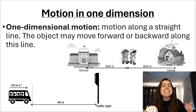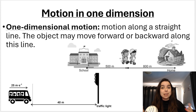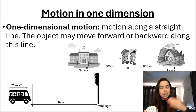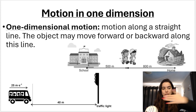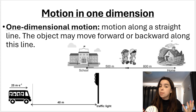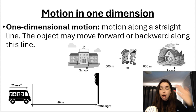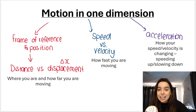Motion in one dimension is exactly what the phrase means — motion or movement in one dimension, along one straight line. Two dimensions would be left, right, up, down. Motion in one dimension would be, for example, moving backwards or forwards along a straight line, or up or down along a straight line.